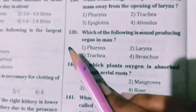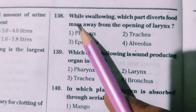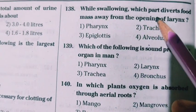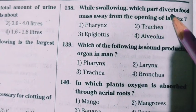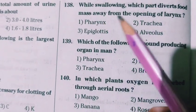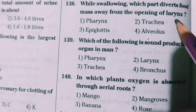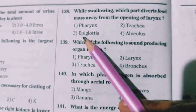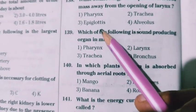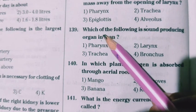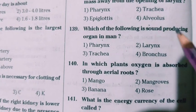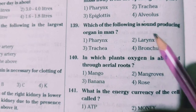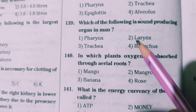Next question: while swallowing, which part diverts the food mass away from the opening of the trachea? It is the epiglottis. Next question: which of the following is the sound-producing organ in man? It is the larynx.